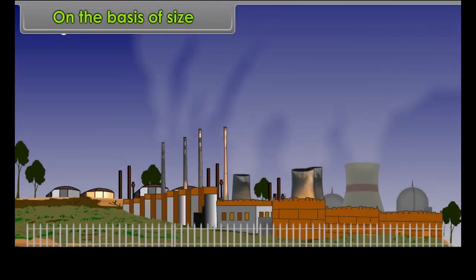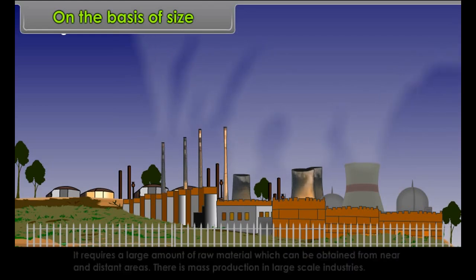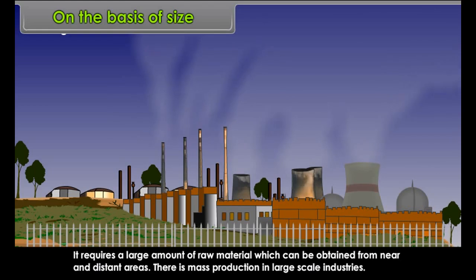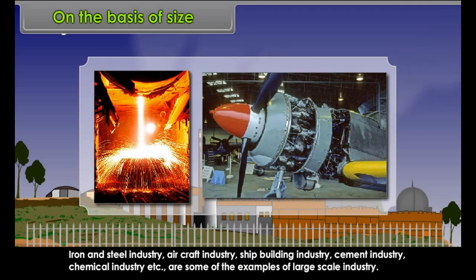Large-scale industries involve the use of machines operated with power, a large number of workers, and a huge amount of capital investment. They require large amounts of raw materials obtainable from near and distant areas, with mass production as a key feature. Examples include iron and steel industry, aircraft industry, shipbuilding industry, cement industry, chemical industry, etc.